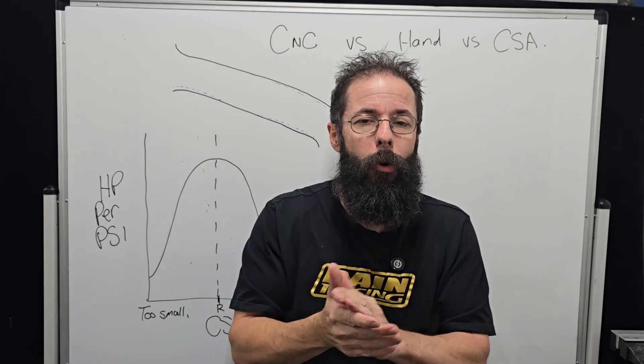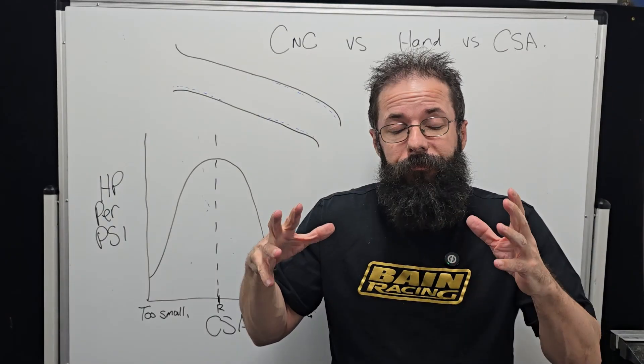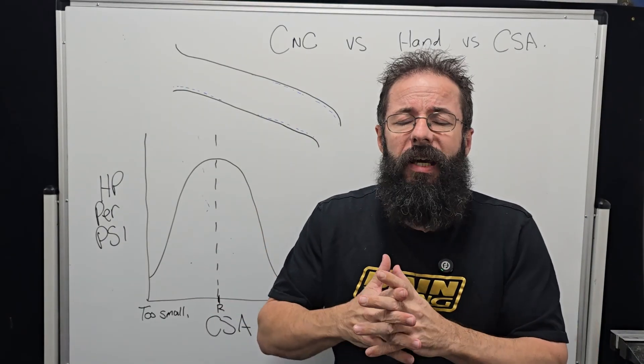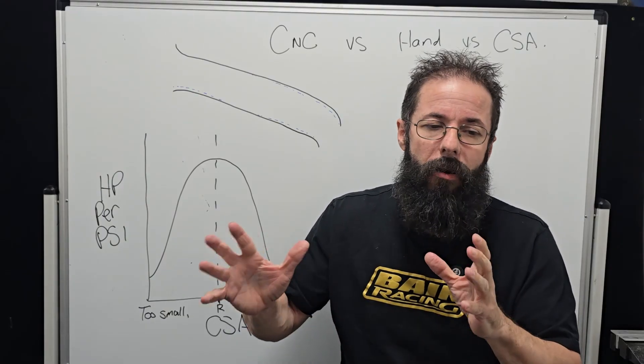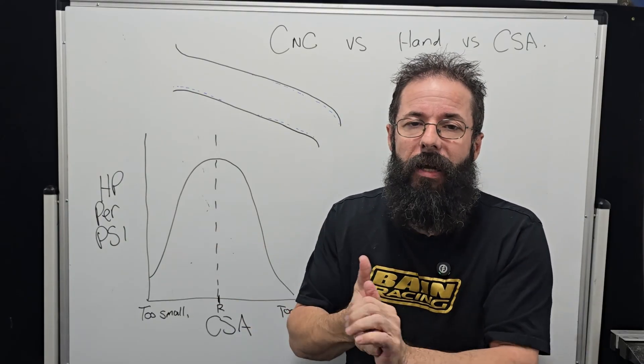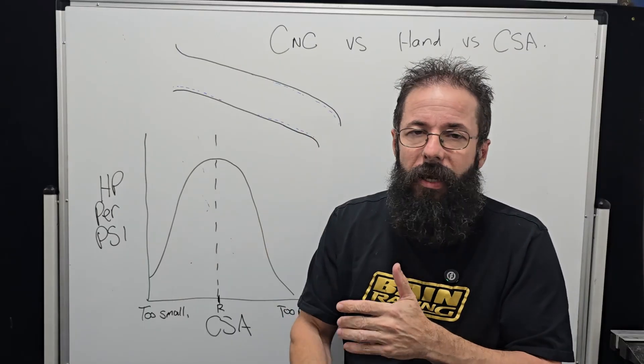I've done this on 1400-1500 horsepower RBs because they're such a horrible port as far as size goes from the factory. People go and CNC them out bigger and they see less everywhere: less horsepower per PSI. This can be in the couple of hundreds.